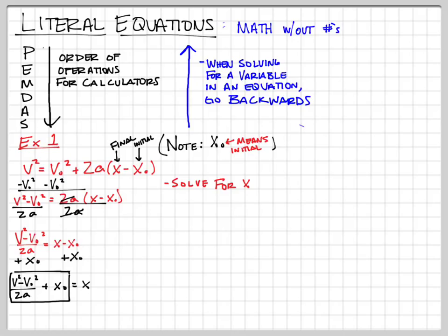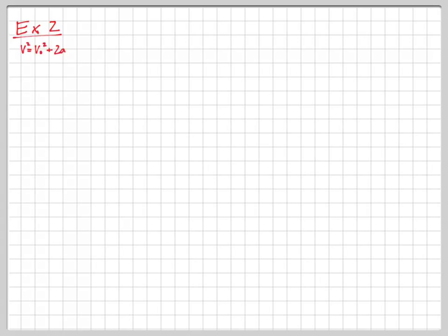And that's how we solve for that. The best way to deal with these is just practice — we're just moving things from one side to the other, and our ultimate goal is to get the variable we're looking for by itself. Here's another example — same equation, but this time we're going to solve for A.